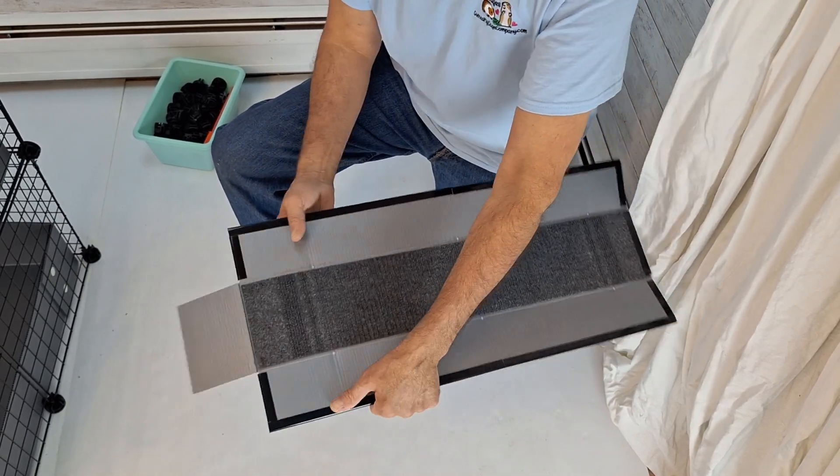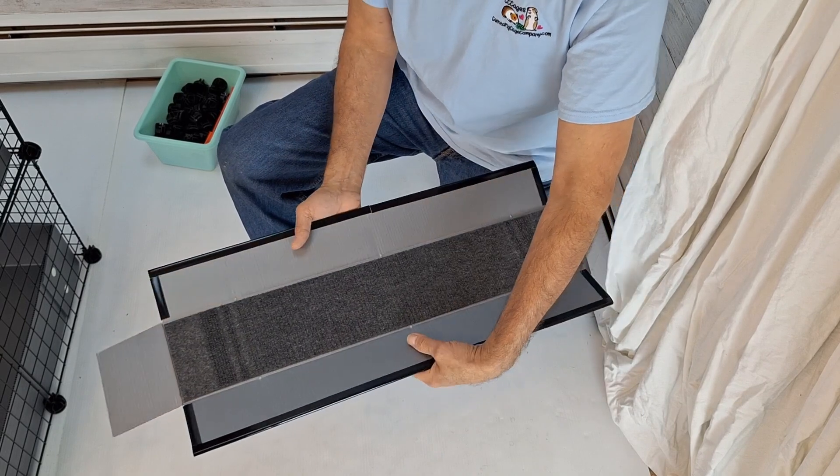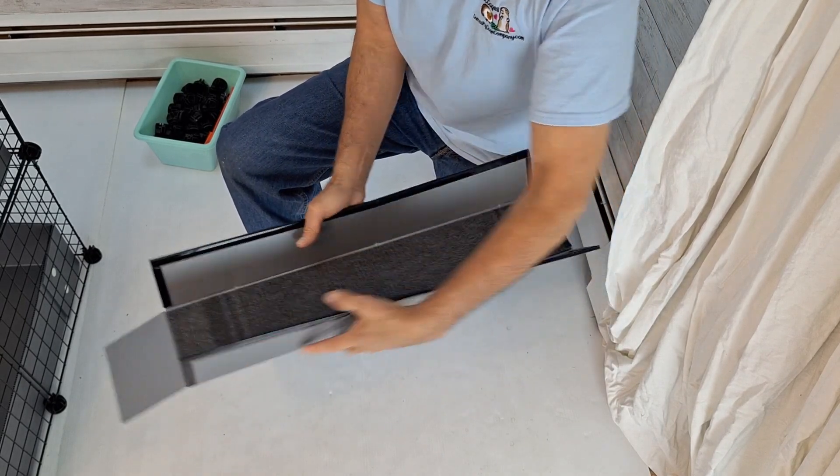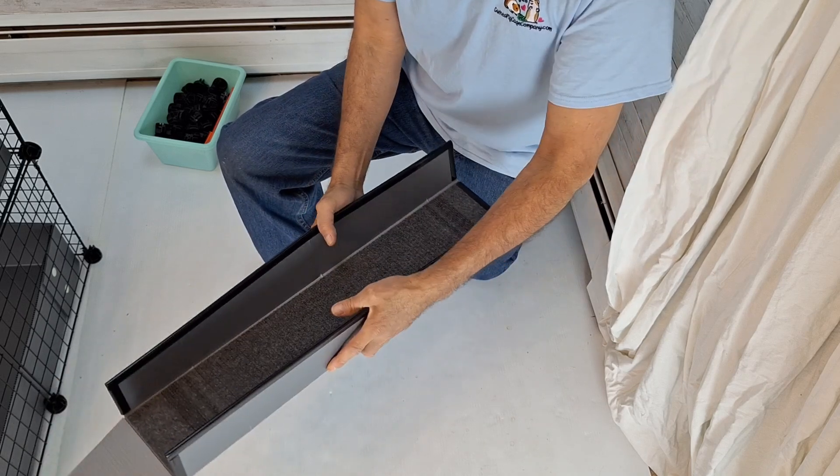When you get your ramp out of your box, it's going to come flat like so. It'll have a little bend in it. All you're going to do is bend it up based on - you've got to put it in your loft.